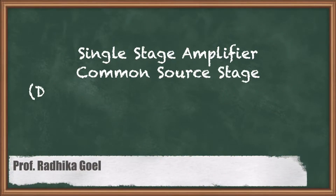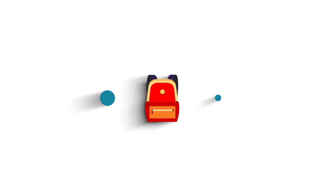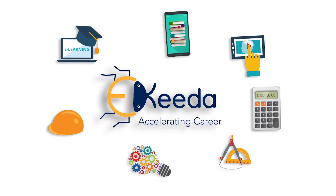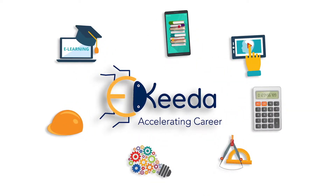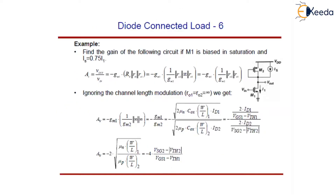In this lecture we will talk about the common source stage diode-connected load with an example. In this example we have to find the gain of the following circuit if M1 is biased in saturation.